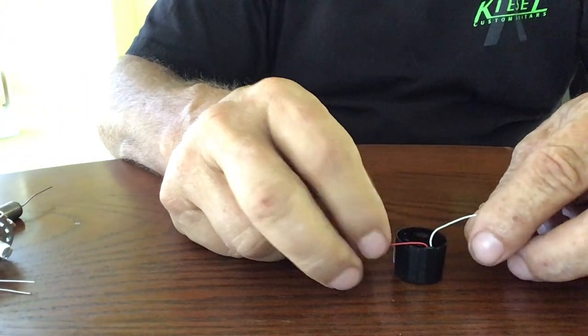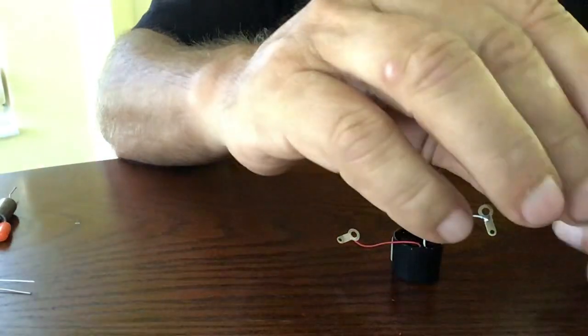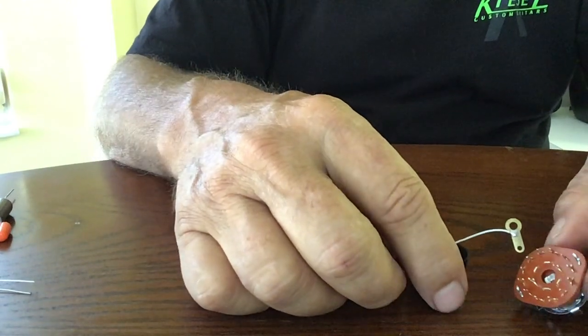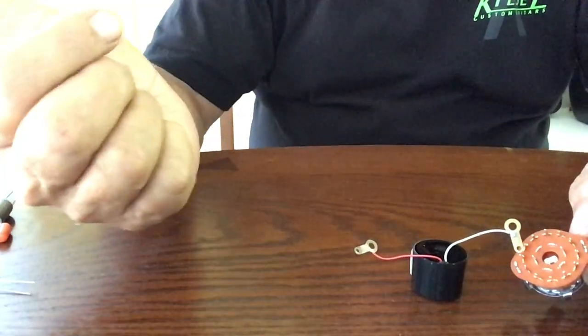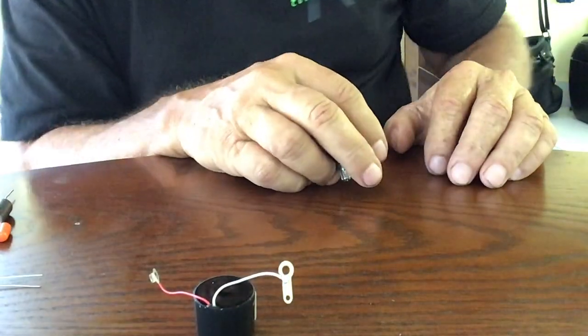So, whichever way you do it, from white to red or red to white, you're coming off the second pole, into here, out of here, into the output jack. And that is how you wire that varitone up.